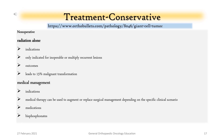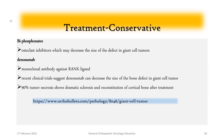Treatment — Conservative/Nonoperative: Radiation alone is indicated only for inoperable or multiply recurrent lesions, but leads to 15% malignant transformation. Medical management can be used to augment or replace surgical management depending on the specific clinical scenario. Bisphosphonates are osteoclast inhibitors that may decrease the size of the defect. Denosumab is a monoclonal antibody against RANK ligand; recent clinical trials suggest it can decrease the size of the bone defect in giant cell tumor, with 90% tumor necrosis showing dramatic sclerosis and reconstitution of cortical bone after treatment.